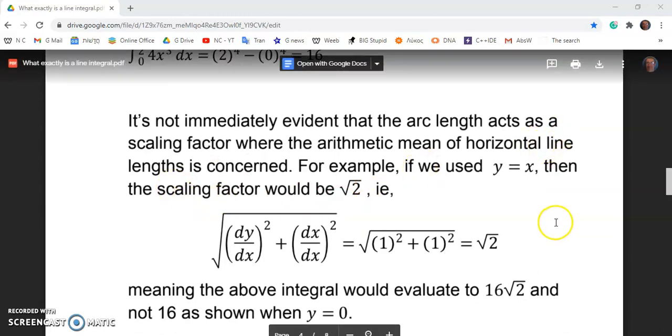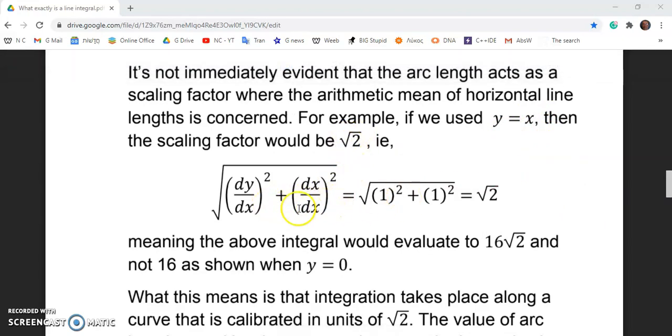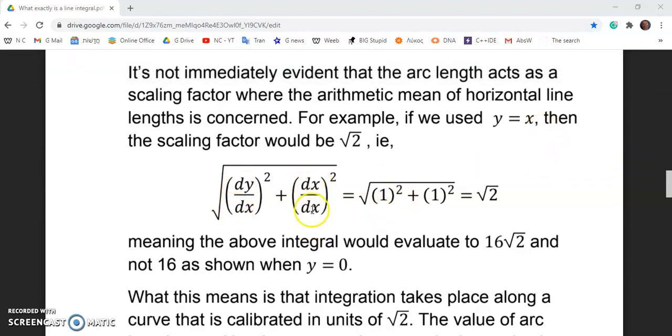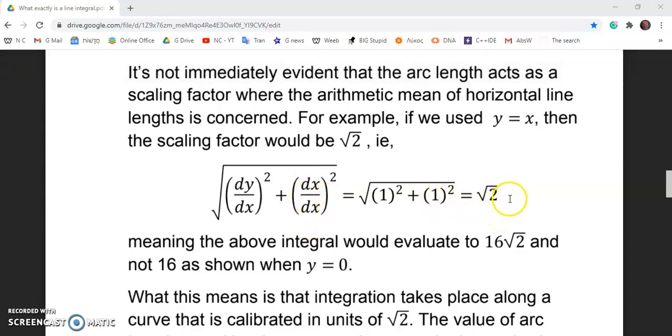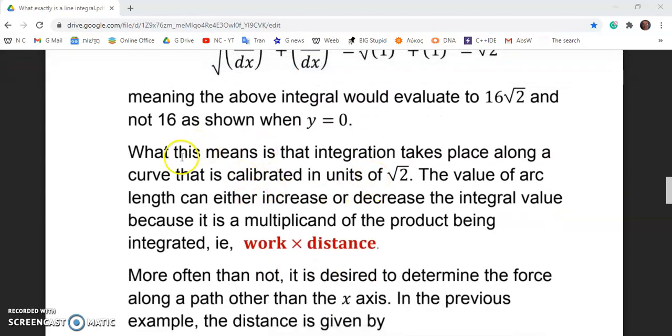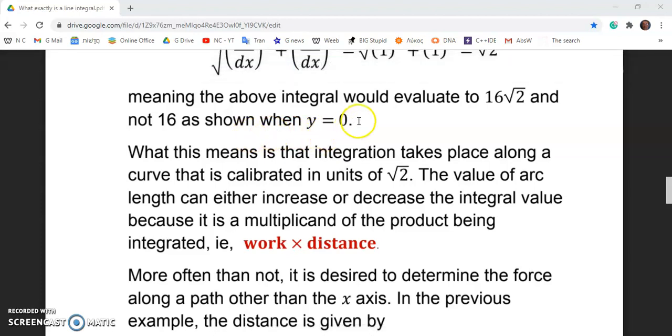So arc length acts as a scaling factor where the arithmetic mean of the horizontal line lengths is concerned. For example, if you have to use y is equal to x, then the scaling factor would be root two. As you see over here, the derivative of y with respect to x is just one squared is one. And the quotient of dx with itself is one. And so it turns out to be root two, meaning the above integral would evaluate to 16 times root two and not 16 as shown when y is equal to zero.